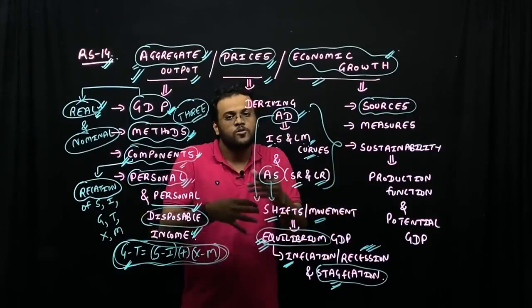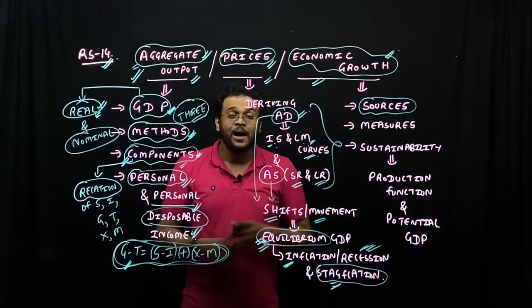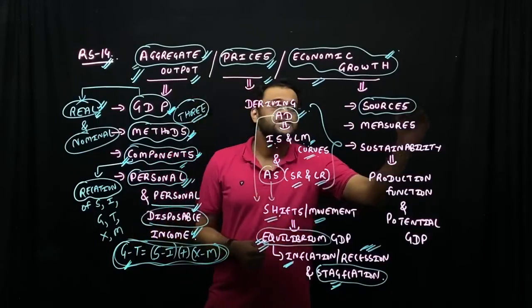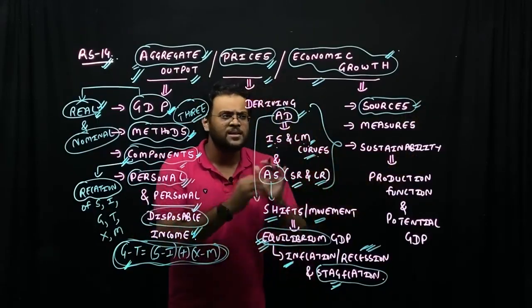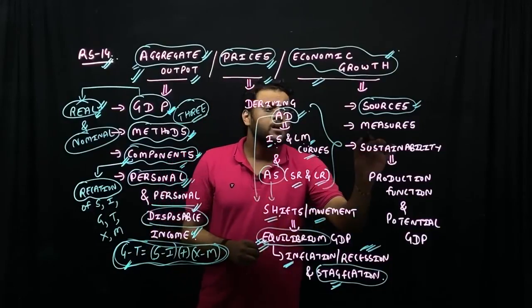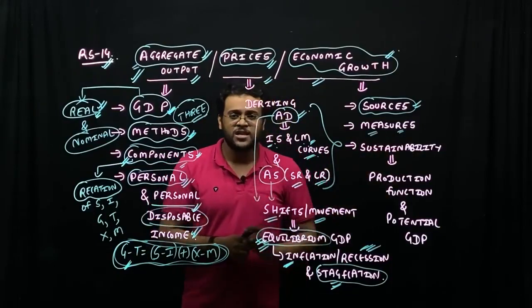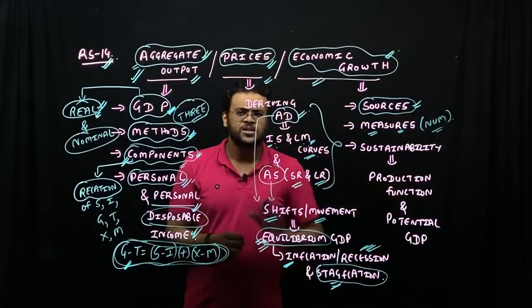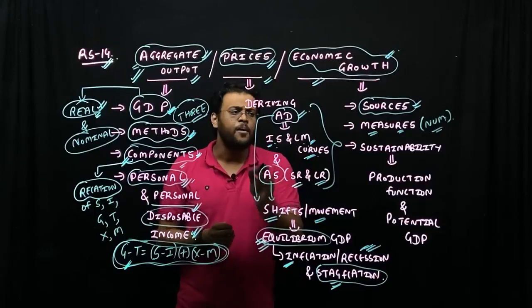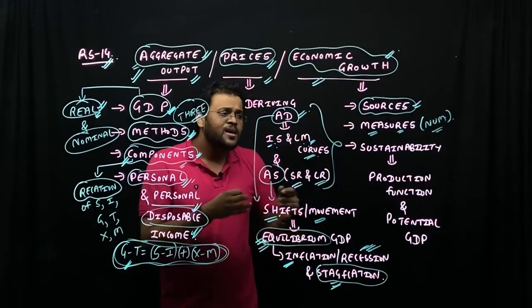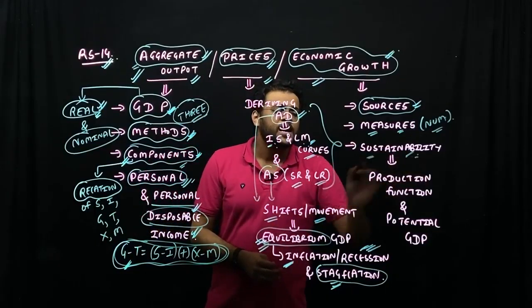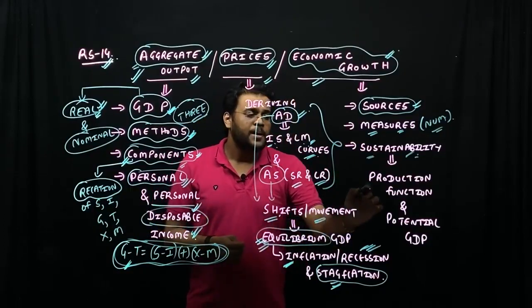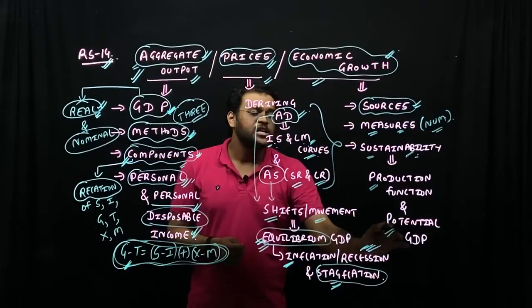If natural resources increase, then there's a positive impact. If labor activity increases, then there's a positive impact. Economic growth—a simple theory to understand—and then how to measure economic growth, how to calculate the formula, and how to calculate economic growth sustainability and maintenance.